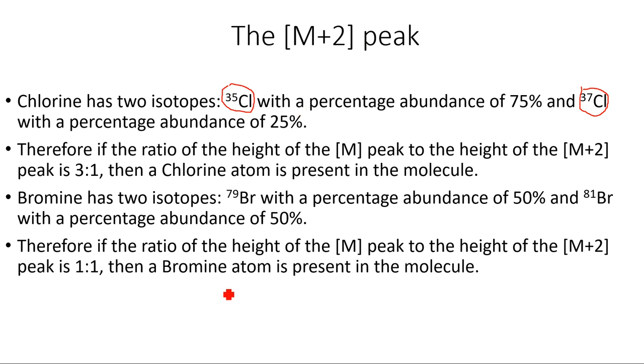Now start brainstorming and try to understand what does this M+2 represent. For example, I have chloroethane which is CH3CH2Cl. I have chloroethane with the Cl-35 isotope, but I can also have a chloroethane molecule...